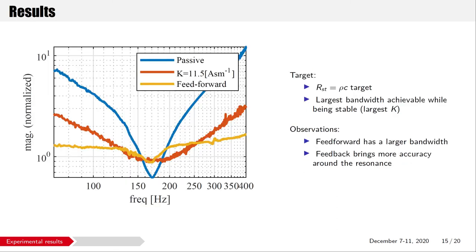I will present two measurements for two different targets. Here are the measured impedances for a target of low C. The measured curves are the ones that had the largest bandwidth while still being stable. This means the largest feedback gain K for the feedback method and the smallest target quality factor Q_t in the feedforward method. On the graph, you can see the impedance magnitude normalized to rho C with respect to the frequency. In blue, the passive case with no control. In red, my feedback implementation with K equals 11.5 amps per meter. In yellow, the feedforward result. It can be seen that while the feedforward achieved a larger bandwidth, the feedback is more accurate, especially around the resonance.